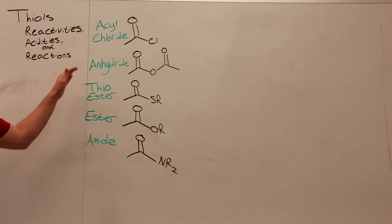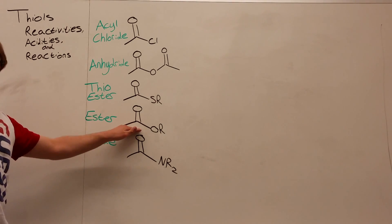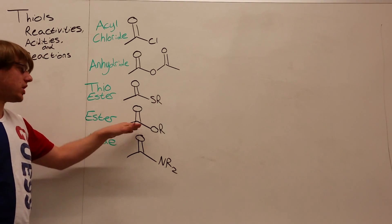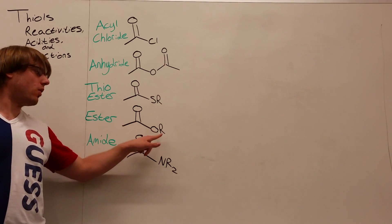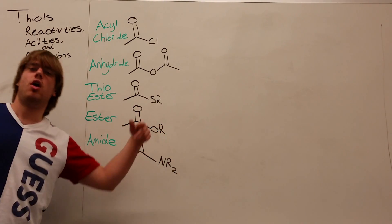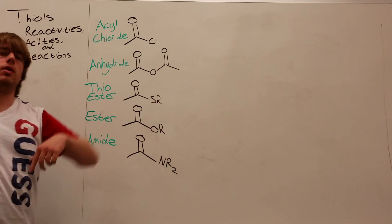A thioester is very much similar to the regular ester we learned about in the carboxylic acid derivatives chapter, which had a carbonyl and then some OR group, or that OR group is O and then carbon. It could be OCH3, Oethyl, O and any carbon.